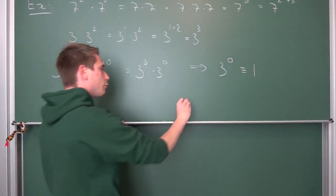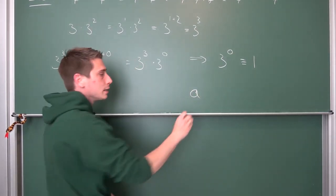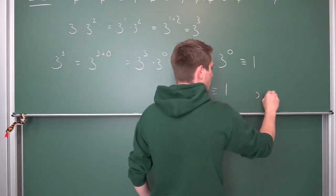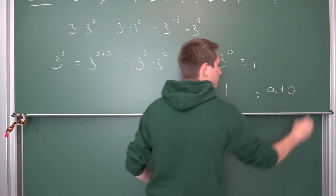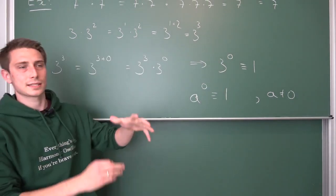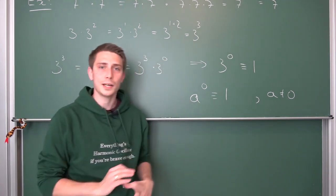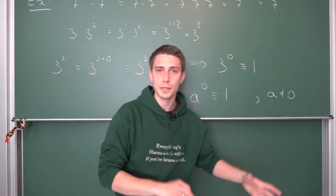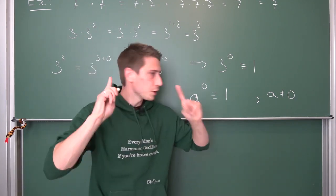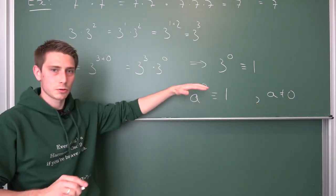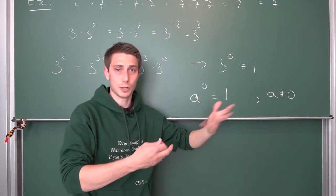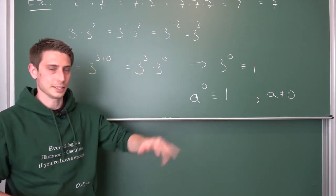And this rule holds for all bases a raised to the 0 power — it's going to be 1, except for a being equal to 0. We don't want a to equal 0, because it gives us some slight problems. Later when we talk about limits and analysis it will make more sense. You can also define it to be 1, but for now, 0 to the 0 power is undefined. Another video will cover that when we talk about this later in the series.